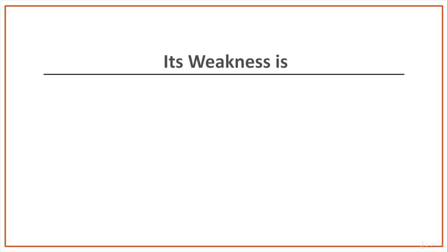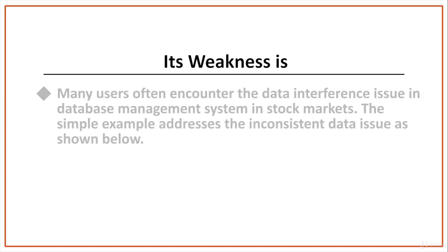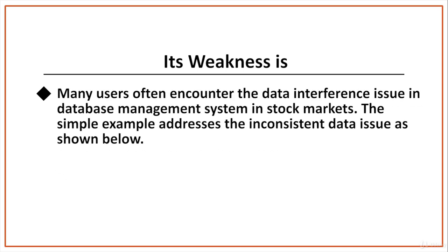For optimistic concurrency control, the strength is that transactions are executed more efficiently, data content is relatively safe, and throughput is much higher. Its weakness is that there is a risk of data interference among concurrent transactions since transaction conflicts may occur during execution. In this case, data is no longer correct, the database may have hidden errors with inconsistent data, and even if a conflict check is performed at the end of transactions, transactions may be in deadlock, causing the system to hang.